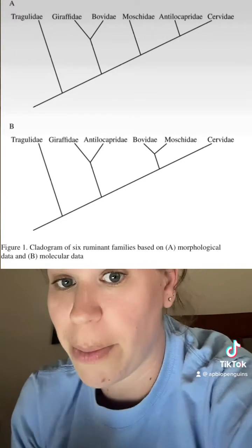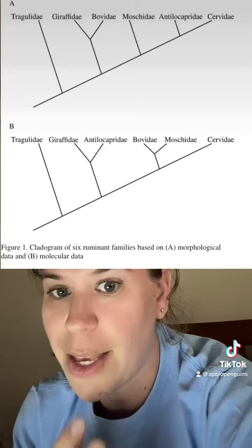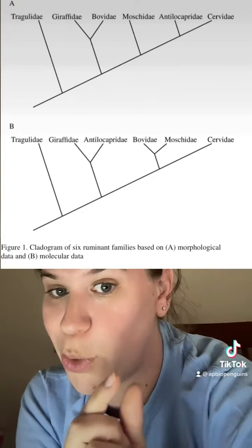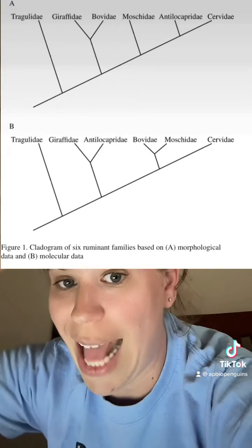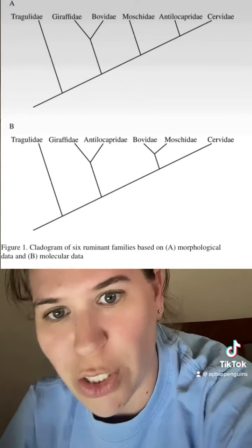The second diagram is based on molecular evidence. Because the fact that the B and the M are more closely related, they're going to have least differences between them, versus if you're looking at A that has to do with morphological differences.